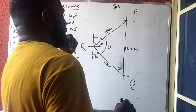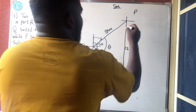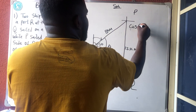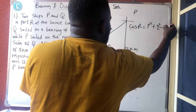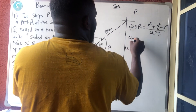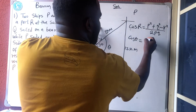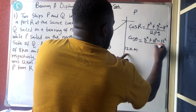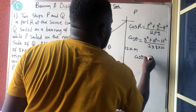We are given three sides of the triangle, so we use the cosine rule. Cosine of angle R equals: starting from the other sides — p² plus q² minus r² — all over 2pq. The side facing the angle gets the minus sign. So: cos θ = (8² + 10² − 12²) / (2 × 8 × 10).